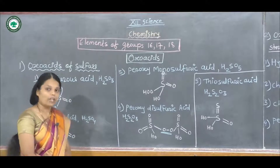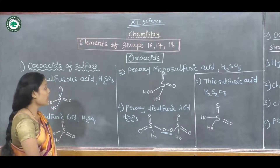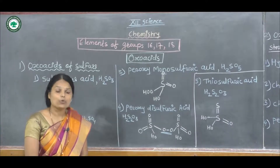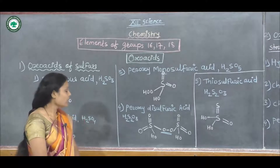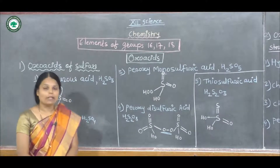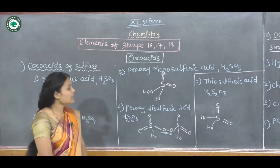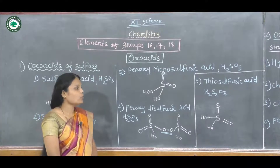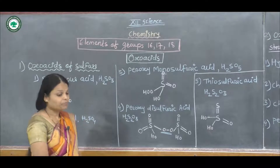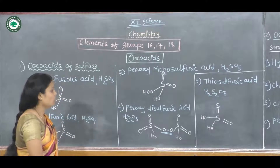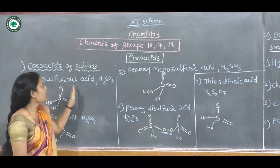To summarize, the oxoacids of sulfur are: sulfurous acid (H₂SO₃), sulfuric acid (H₂SO₄), peroxymonosulfuric acid (H₂SO₅), peroxydisulfuric acid (H₂S₂O₈), and thiosulfuric acid (H₂S₂O₃). Some of these are unstable and cannot be isolated easily; they are formed in aqueous solution. This completes the first type of oxoacids.